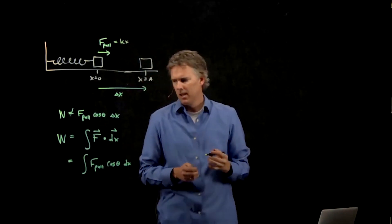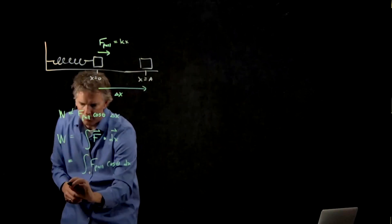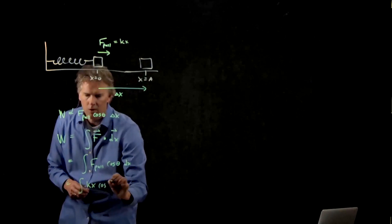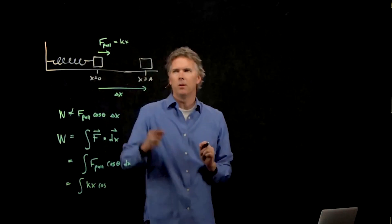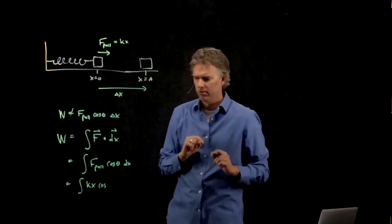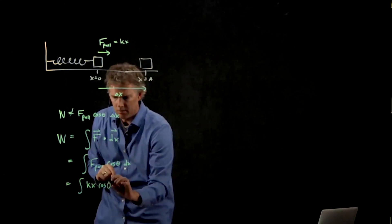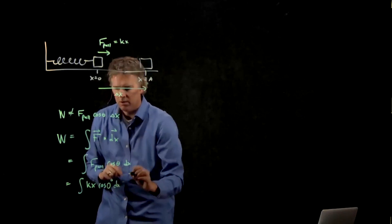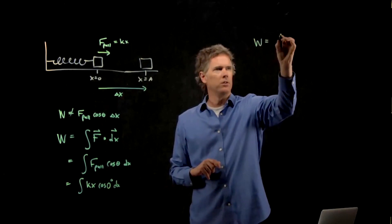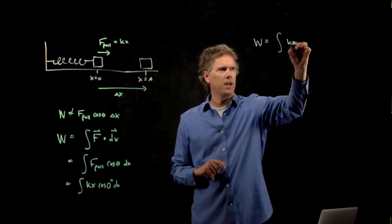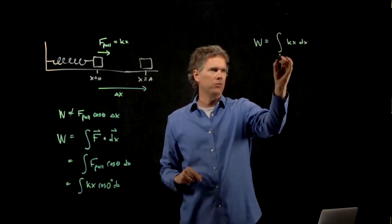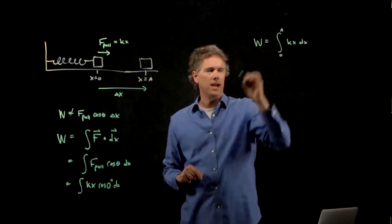And so this whole thing becomes integral of kx cosine of the angle between them. What's the angle between F pull and delta x? And so we've got integral from x equals zero. And so we get work is equal to the integral of kx dx. And we've gone from x equals zero to x equals a.